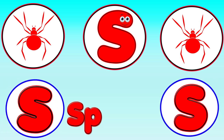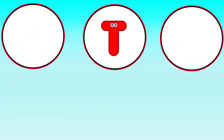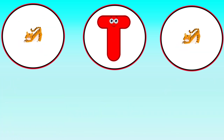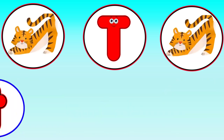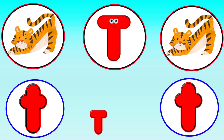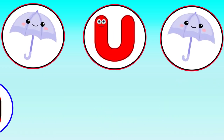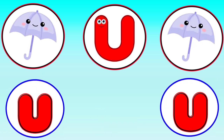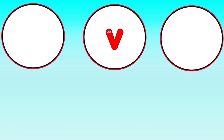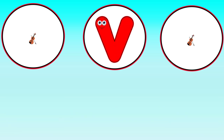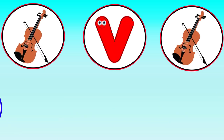S is for Spider. Sh, Sh, Spider. T is for Tiger. T, T, Tiger. U is for Umbrella. A, A, Umbrella.